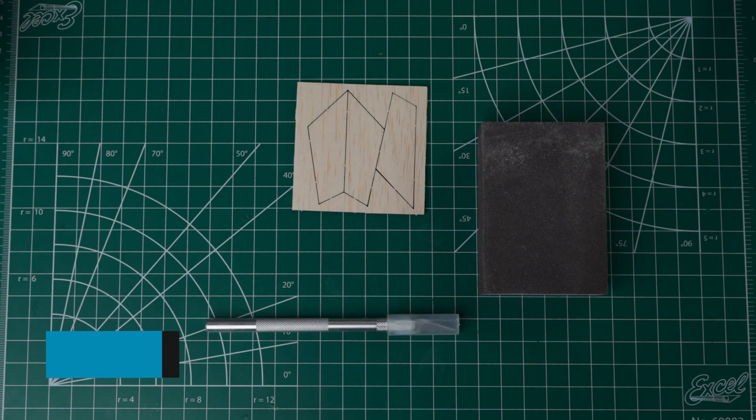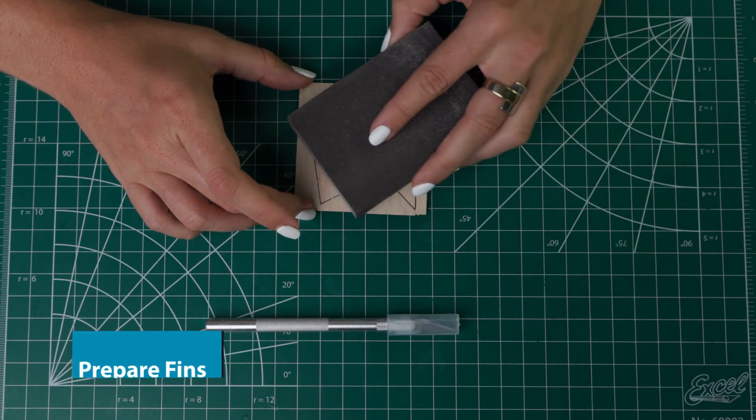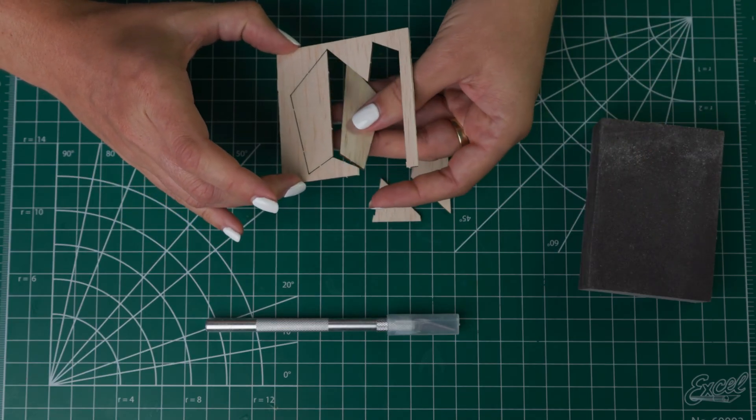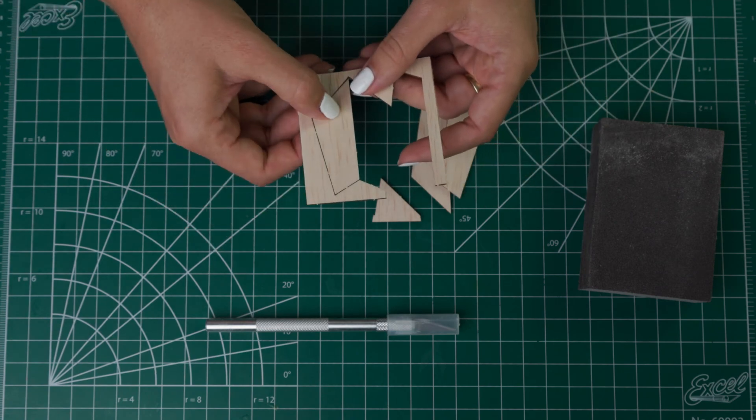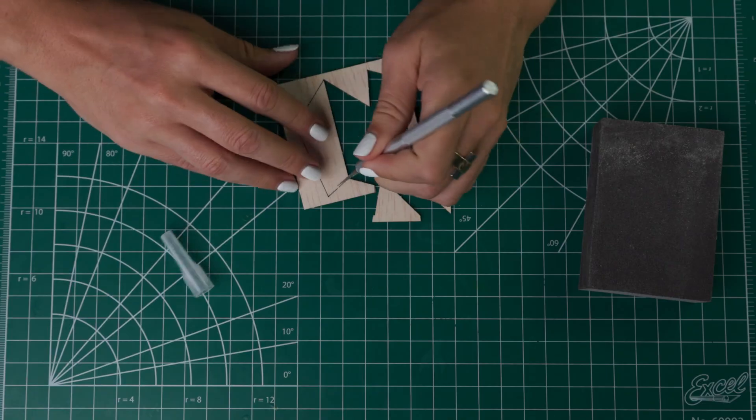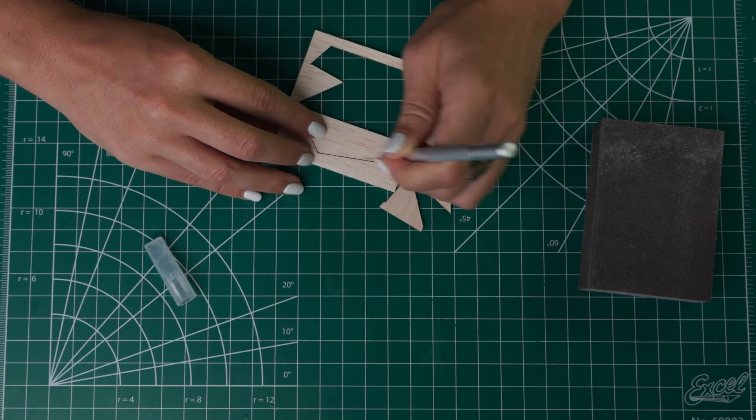Now we're going to prepare the fins. First thing is you can just sand them on here so they're all flat together. Mine are already coming off so I'm going to sand them individually. When you are popping them out of this balsa wood you can use a hobby knife if you want. You just want to be really careful you don't break any of these fins as you pop them out.